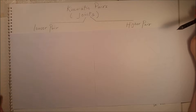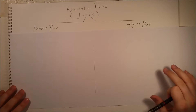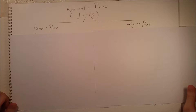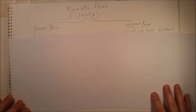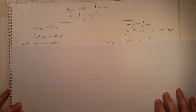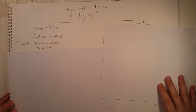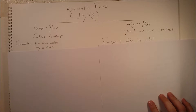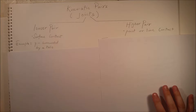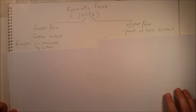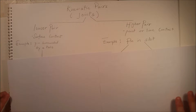Now let's talk about the two categories. Starting with the lower pair: the lower pair describes joints with surface contact. A very simple example would be a pin surrounded by a hole — that is surface contact. The higher pair describes a joint with point or line contact.